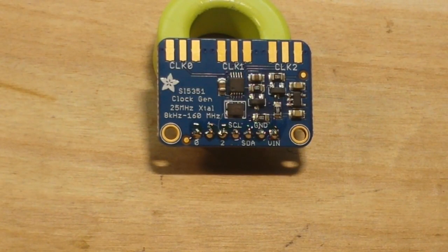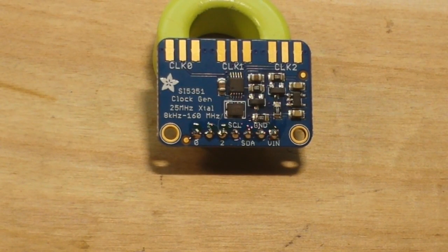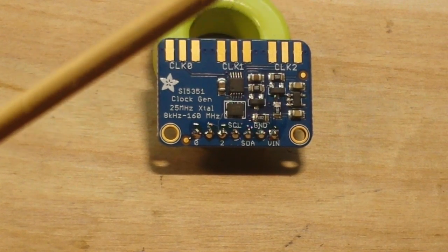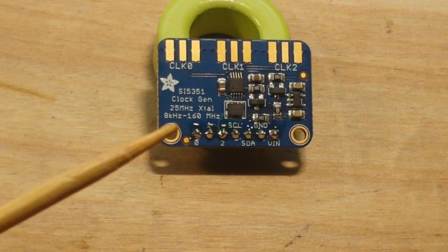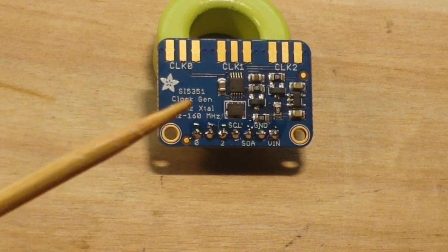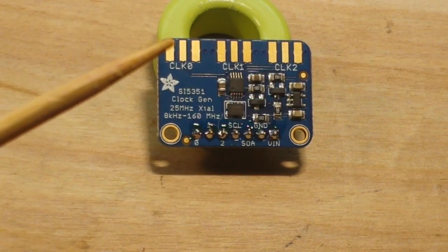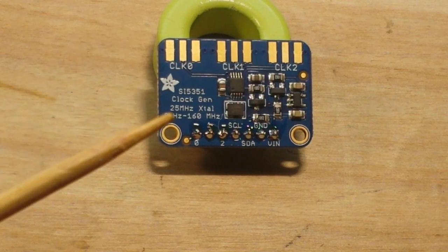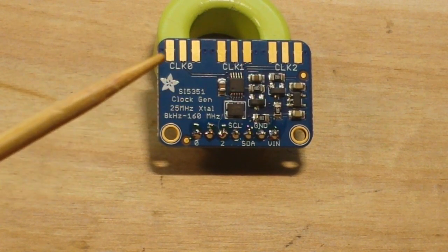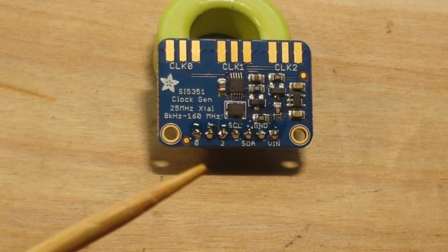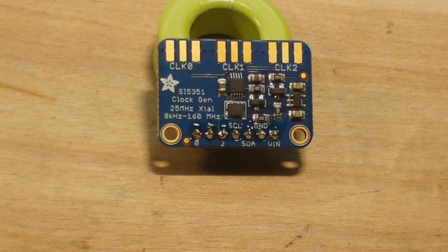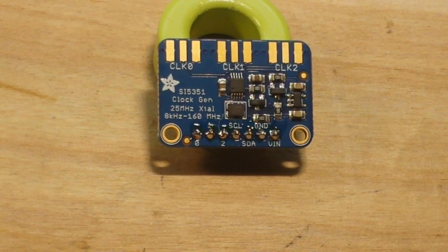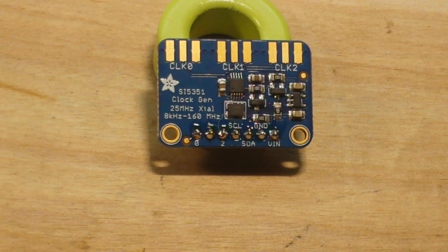Hey what's happening guys today we are going to take a look at this little breakout board from Adafruit for the Silicon Labs SI5351 chip. This is a three output clock generator and it can give you an output from 2.5 kilohertz to 200 megahertz pretty cool little device here.